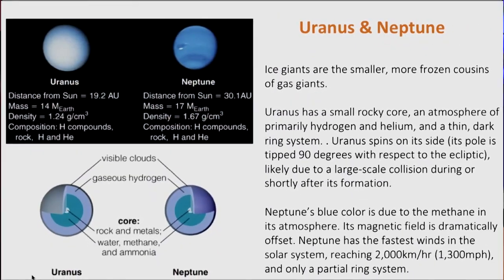There's less known about Uranus and Neptune because they have not received as much direct visitation by NASA probes. These ice giants are smaller, more frozen cousins of Jupiter and Saturn. Uranus has a small rocky core, an atmosphere of mostly hydrogen and helium, and a very thin ring system. It spins on its side with its pole tipped by almost 90 degrees with respect to the ecliptic, giving it enormous seasons of almost a century of summer followed by a century of winter — probably caused by a collision during or shortly after its formation. Neptune has a beautiful pale blue color primarily due to methane in its atmosphere, a magnetic field offset by a large degree from its orbital tilt, the fastest winds in the solar system reaching over a thousand miles per hour, and a subtle, partially incomplete ring system.